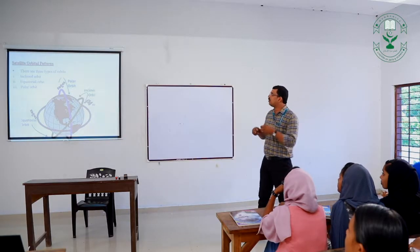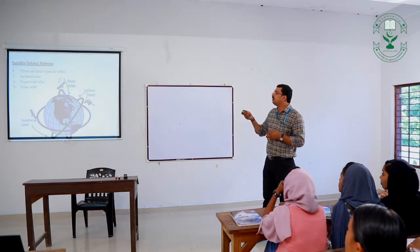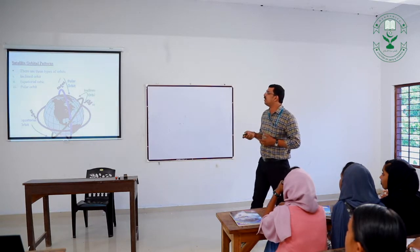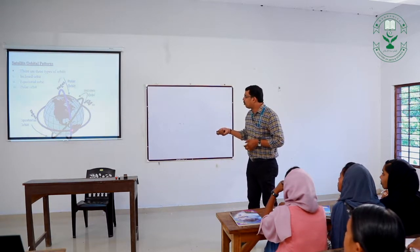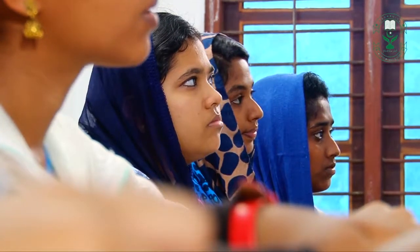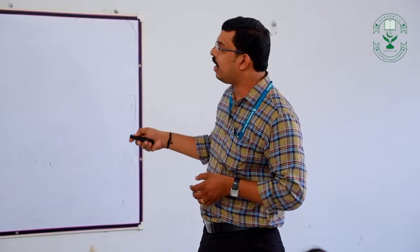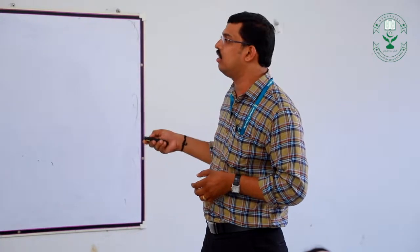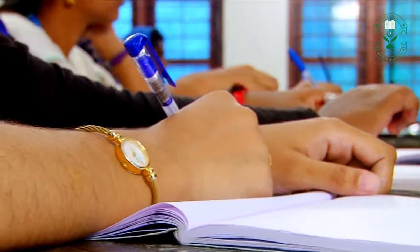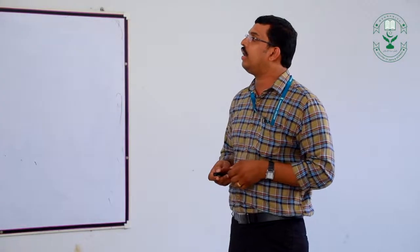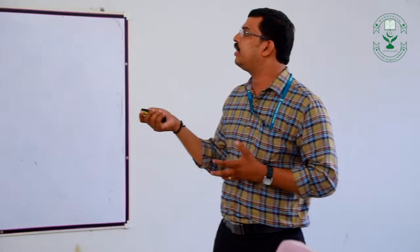According to the way in which a satellite revolves around Earth, orbits can be classified into three types: inclined orbit, equatorial orbit, and polar orbit. Polar orbits revolve from pole to pole — north pole to south pole. Equatorial orbits revolve around the equatorial plane of Earth. Inclined orbits travel at an angle of inclination with the equatorial plane, covering all orbits except those directly over the poles.